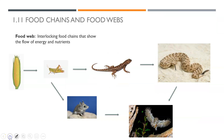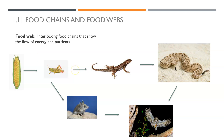Food chains get more complicated when we add in more species. Food webs are interlocking food chains, and they also show the flow of nutrients. We've added a mouse and an owl. If we just looked at corn to grasshopper to mouse to owl, we'd have a food chain — but these multiple food chains together make a food web.